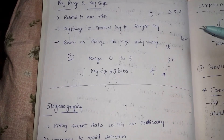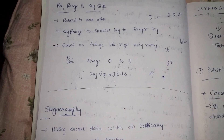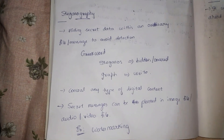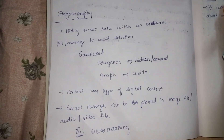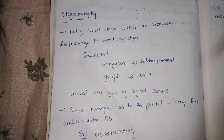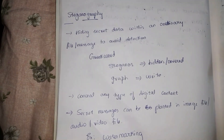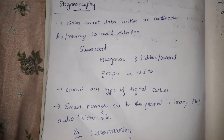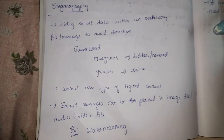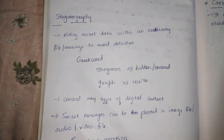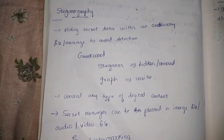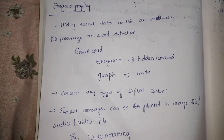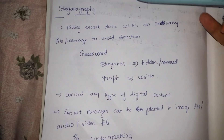There is another concept called steganography. It is a technique where, if we want to send some secret message, we want to do it in such a way that nobody should be able to detect that a secret message is being exchanged. The best way to do this is to disguise it. Steganography means hiding secret data within an ordinary file or message to avoid detection. The attacker will think it is an ordinary file, but in reality a secret message is being exchanged. It is derived from the Greek words steganos, meaning hidden, and graph, meaning writing.